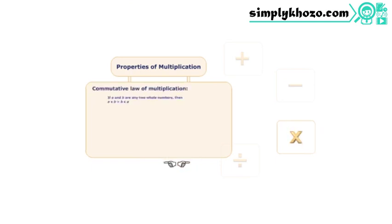In the multiplication process, the order of the whole numbers does not have an effect on the end result.